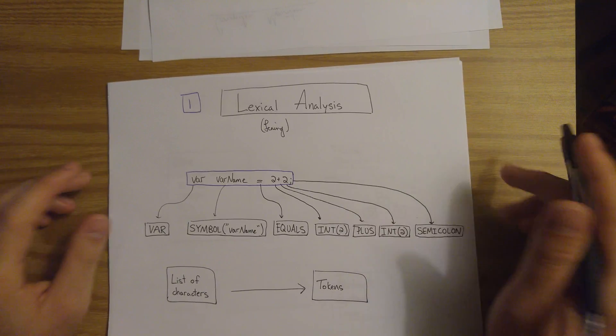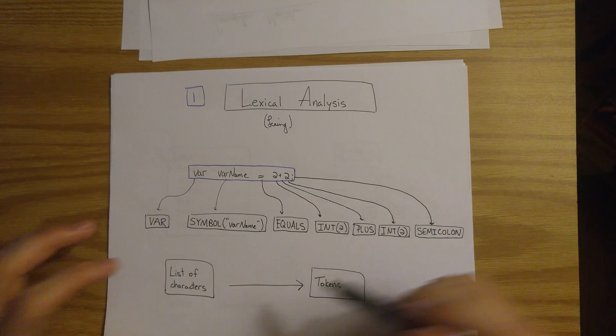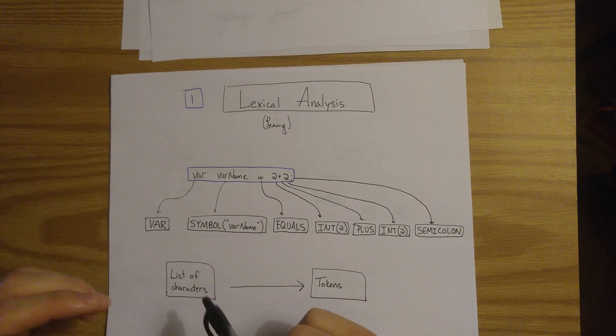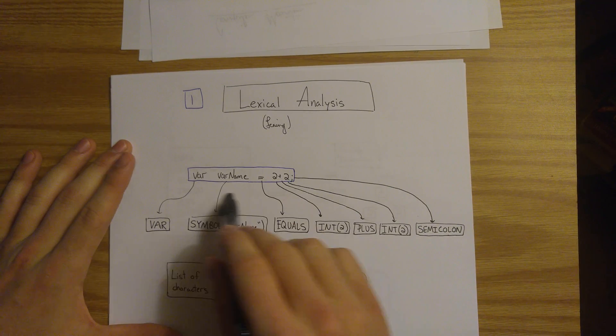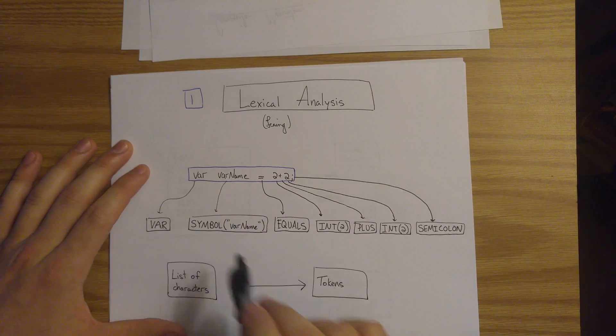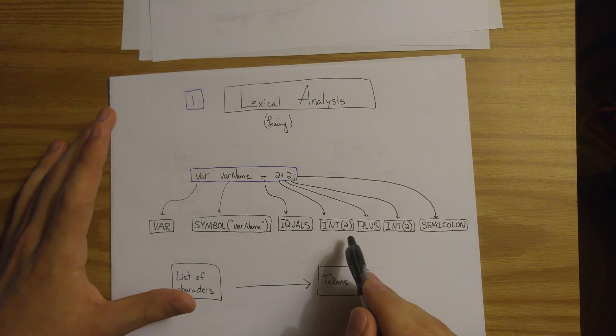So the first stage in compiling is taking the program, which is really just a list of characters, and it chops it into tokens. And so these tokens could be reasoned about a lot more directly instead of just this list of ASCII characters. We can really have an integer representation of 2.